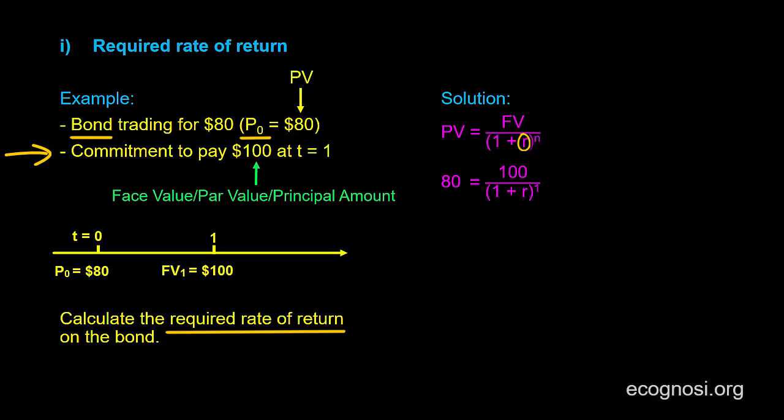So how do we solve for R? Let's start by multiplying both sides of this equation by 1 plus R to the first power, which is the same as just 1 plus R. So 1 plus R times 80 equals 1 plus R times 100 over 1 plus R. And we've done something similar in another video in the past when trying to solve for the present value.